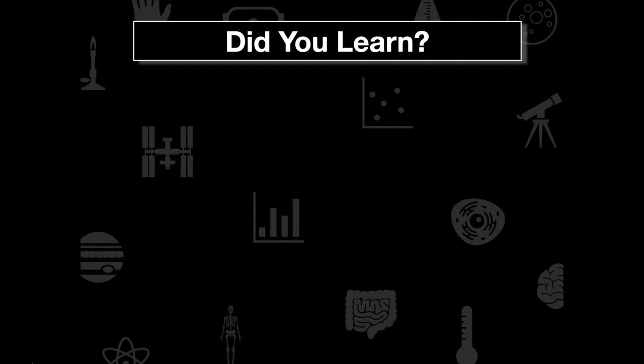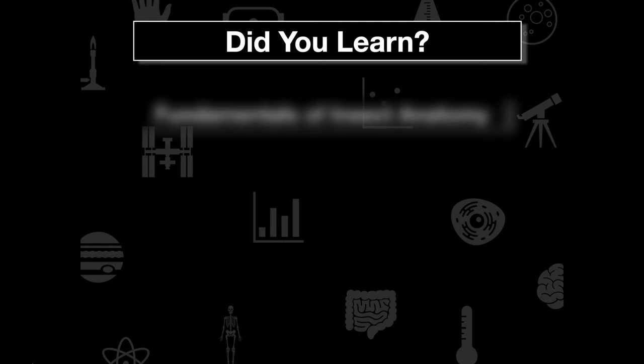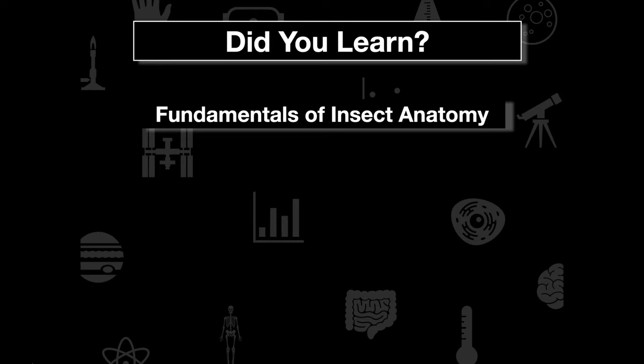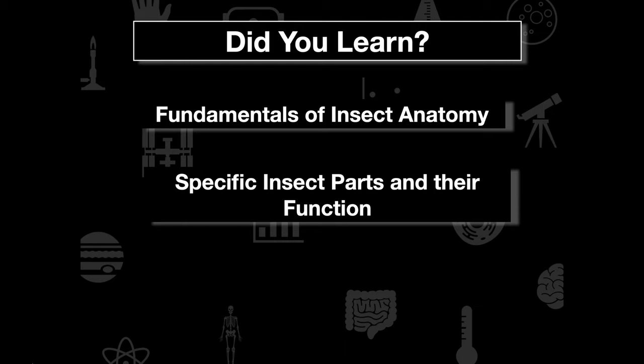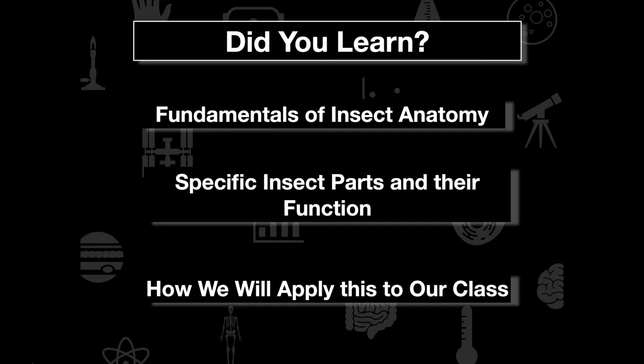This is the end of the video. Here are the key takeaways: we learned about the fundamentals of insect anatomy — the head, thorax, and abdomen — and we looked at specific insect parts and their functions, not just what they are but what purpose they serve. Lastly, we want to think about how we'll apply this to our class when we dissect the lanternfly. I will see you all in class tomorrow.